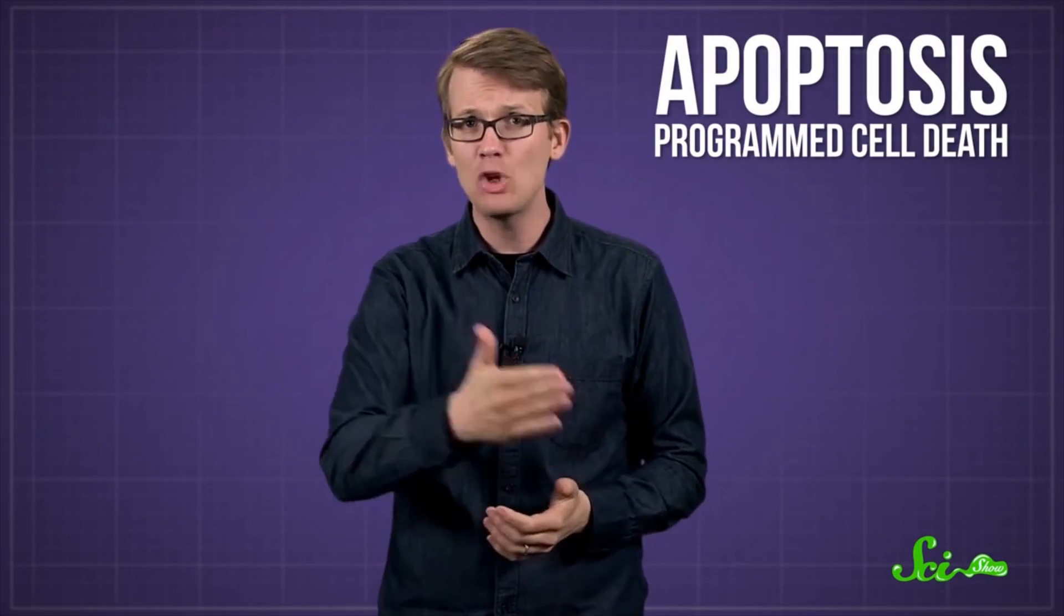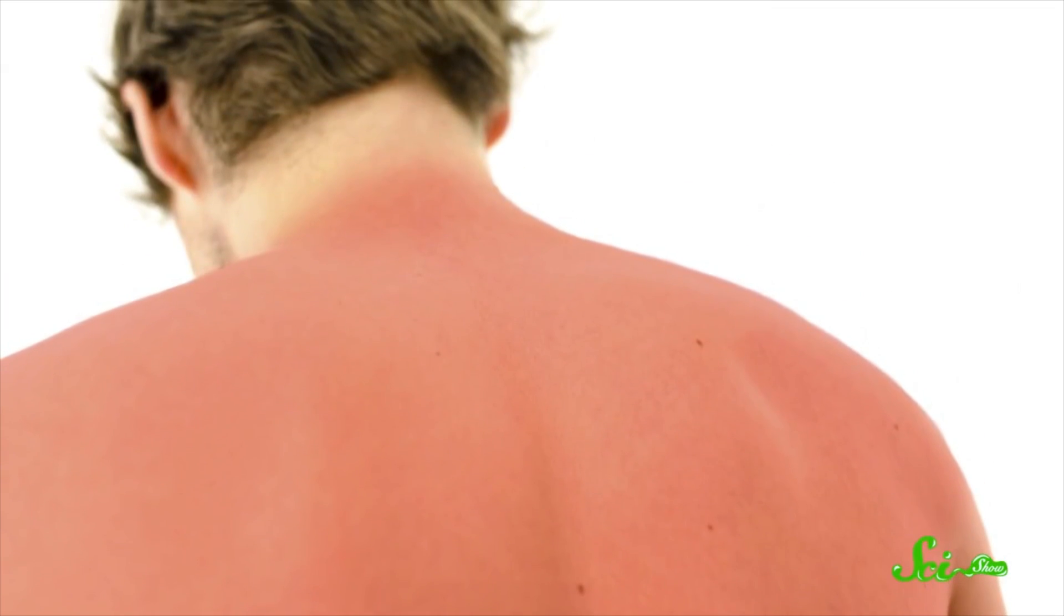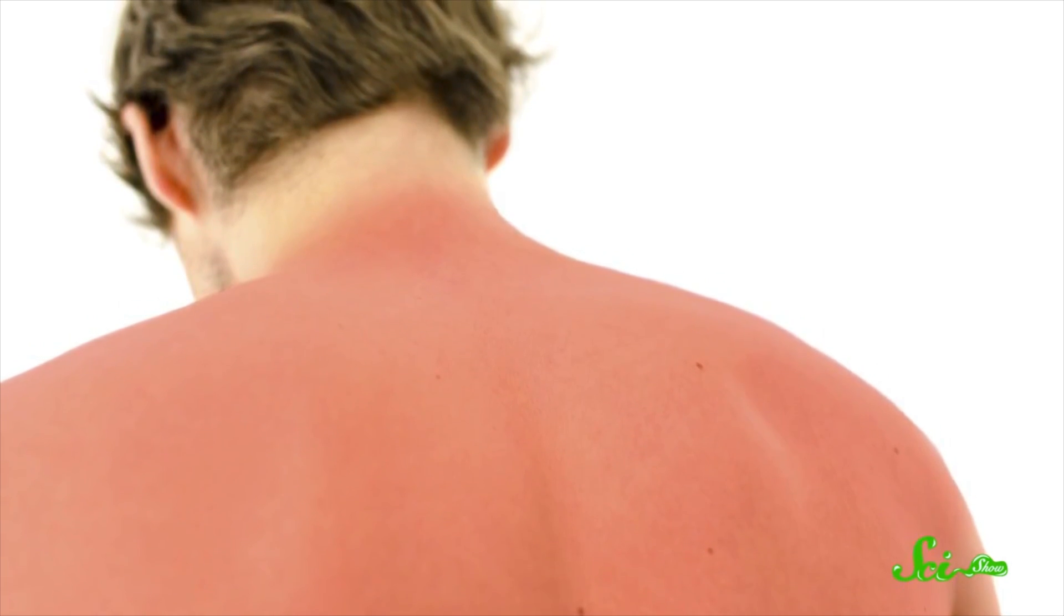When UVB rays damage a cell's DNA, it'll often destroy itself in a process called apoptosis. If too many cells do this, an immune response kicks in. That immune response is otherwise known as a sunburn. Basically, your skin cells are like, my DNA has been damaged, so I must murder myself before I give you cancer.